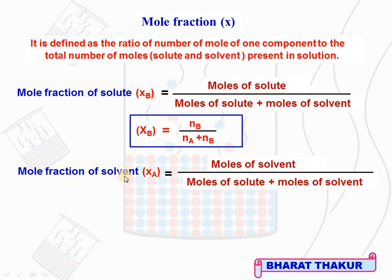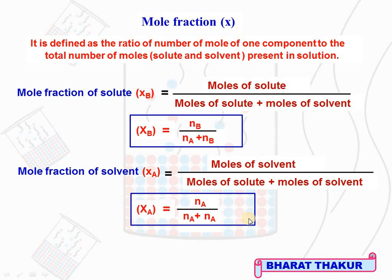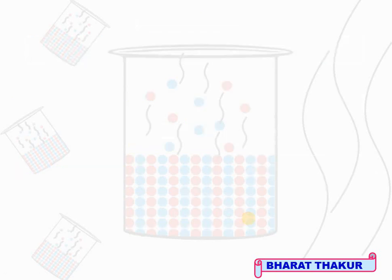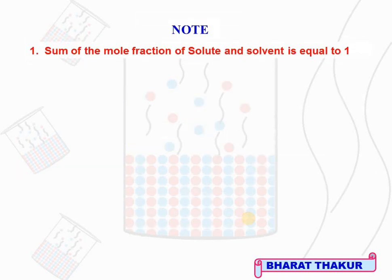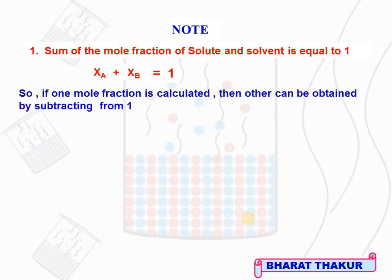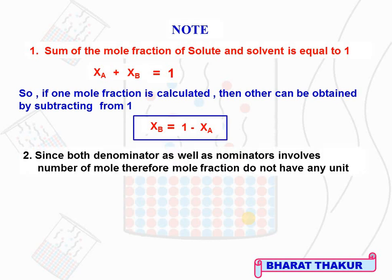Similarly, mole fraction of solvent XA = NA / (NA + NB). An important property to note: the sum of mole fractions of solute and solvent is always equal to 1, i.e., XA + XB = 1. So if we calculate one, the second can be found by subtracting from 1. Since both numerator and denominator involve number of moles, mole fraction has no unit — it represents only a ratio.